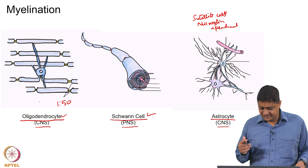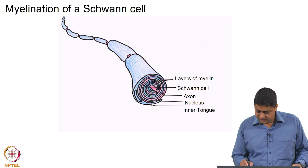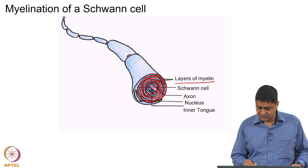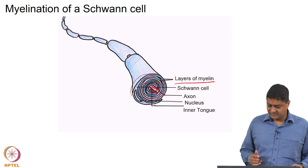In the peripheral nervous system you have Schwann cells, where one Schwann cell myelinates one axon — a 1-to-1 ratio. Using one Schwann cell, multiple layers of myelin form around a single axon. The axon is relatively small compared to the amount of myelin surrounding it.